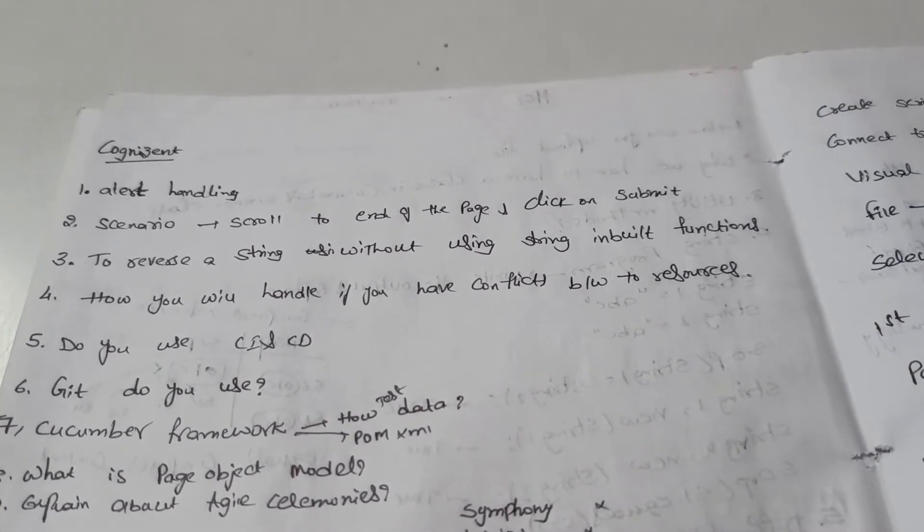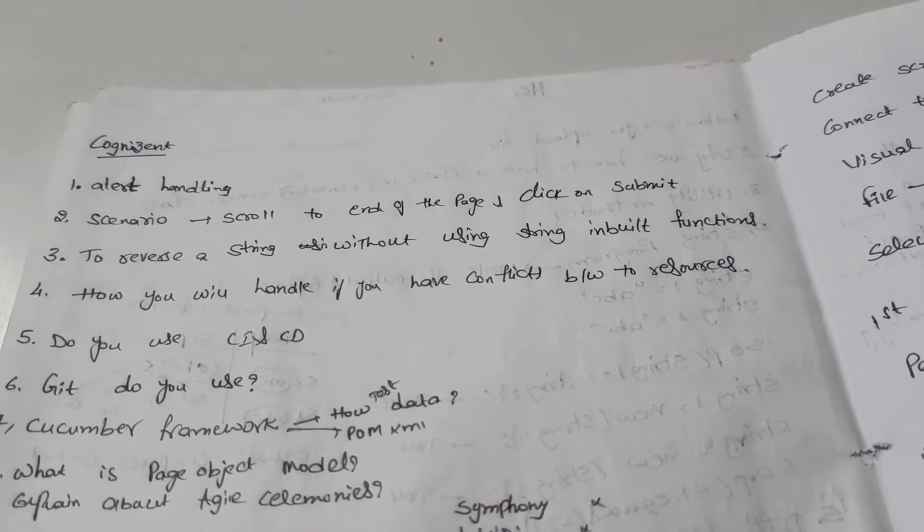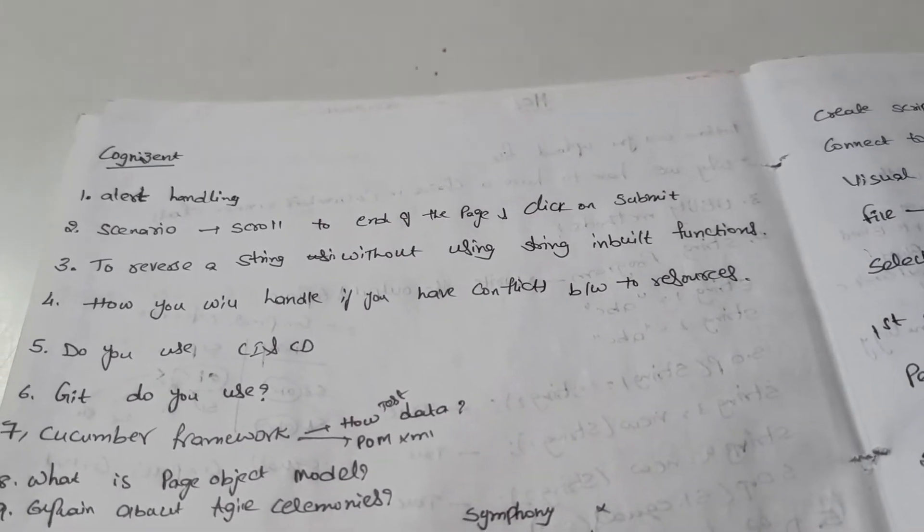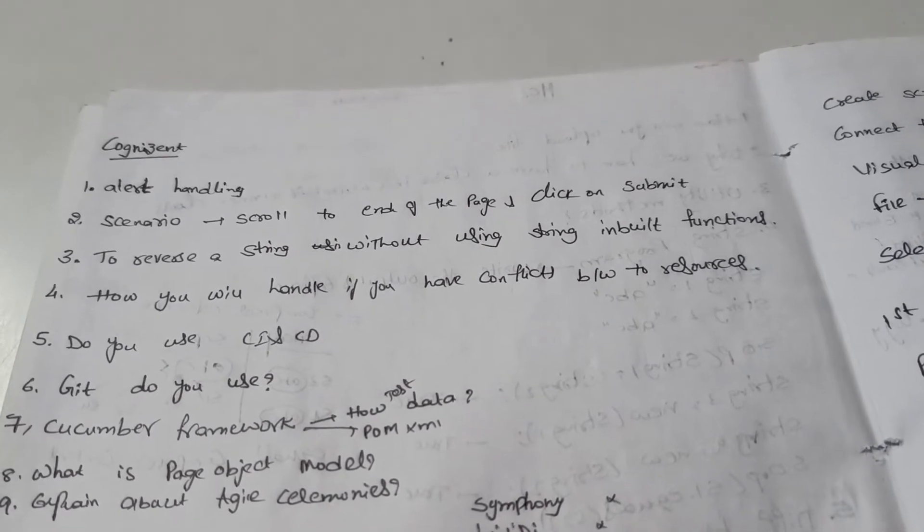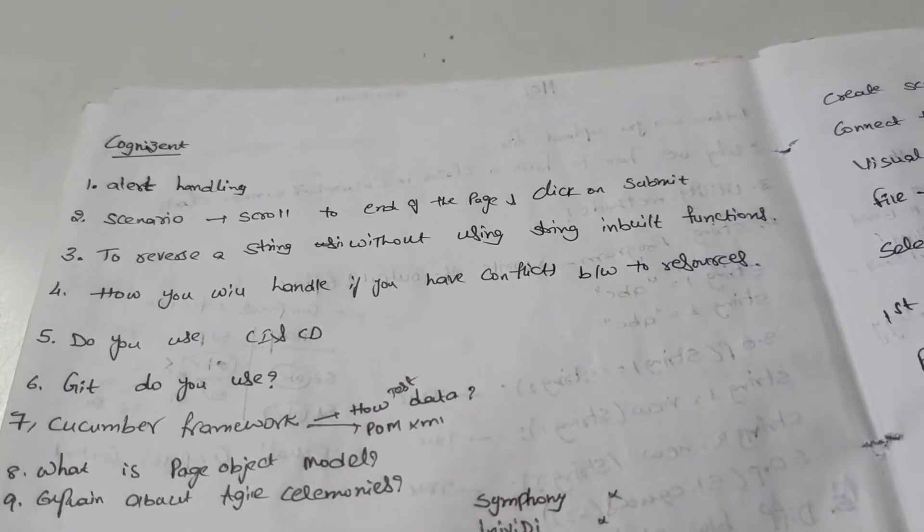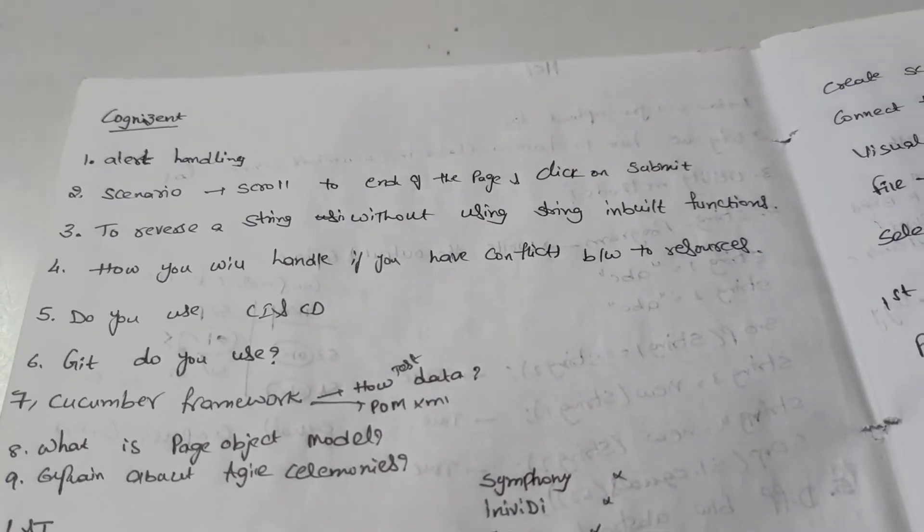The fourth question is how you will handle if you have a conflict between two resources. It's a managerial team handling question. The fifth question is do you use CI/CD, and the sixth question is Git.